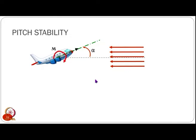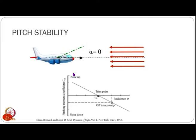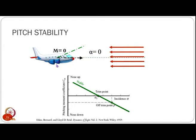Let us say we have a pitching moment acting in the opposite direction. For an aircraft with an alpha like this and a pitching moment acting in the opposite direction, the airship would basically reduce the alpha to zero. When we plot the pitching moment coefficient CM versus the angle of attack alpha, we get a curve — the green line here. Because the aircraft is able to reduce the angle of attack to zero by generating a restoring pitching moment, we call this a stable system.